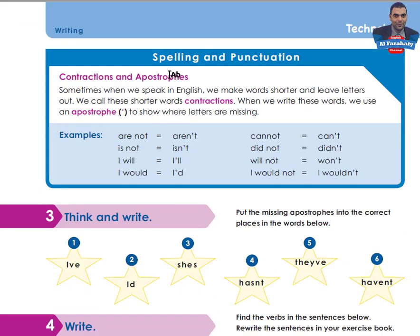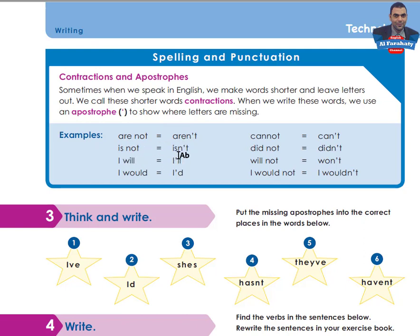Let's go to page 57. Dear students, you know that in the writing section of each unit we have a Spelling and Punctuation section, which focuses on spelling, punctuation, or both. Yes — Contractions and Apostrophes. Sometimes when we speak in English, we make words shorter and leave letters out. We call these shorter words contractions. When we write these words, we use an apostrophe to show where letters are missing. Examples: 'are not' → 'aren't', 'is not' → 'isn't', 'I will' → 'I'll', 'I would' → 'I'd'.